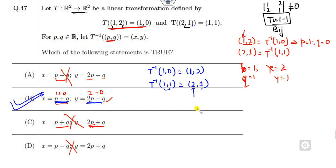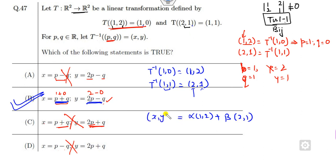Sometimes people may try to write the solution as a linear combination: alpha times (1, 2) plus beta times (2, 1) for any (x, y), then take the transformation and find the result — but there is no need for that. Just try to solve this problem in a very simple way.